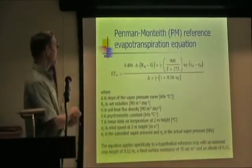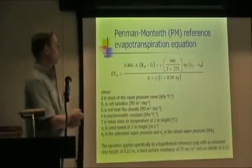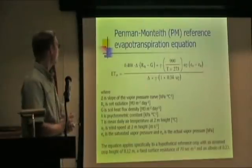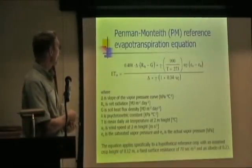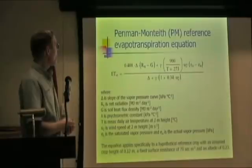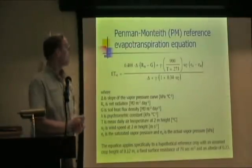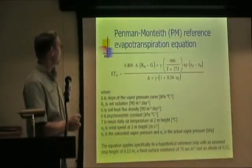We have here net radiation, soil heat flux, air temperature, wind speed. This is the saturated vapor pressure and actual vapor pressure which relate to humidity. And then there's some other physical constants in here. But basically it takes a lot of data to use that equation.